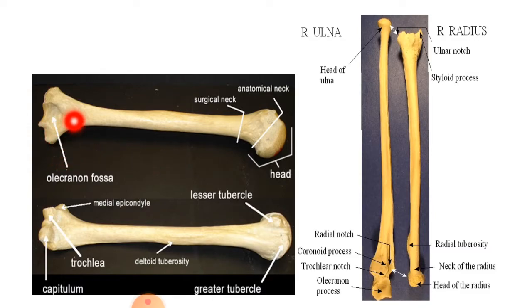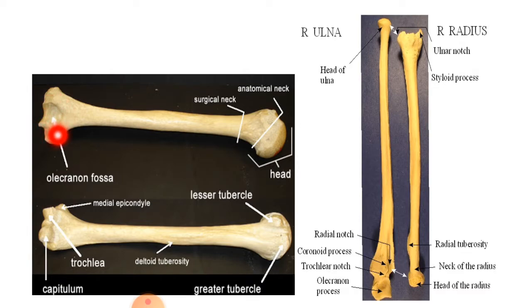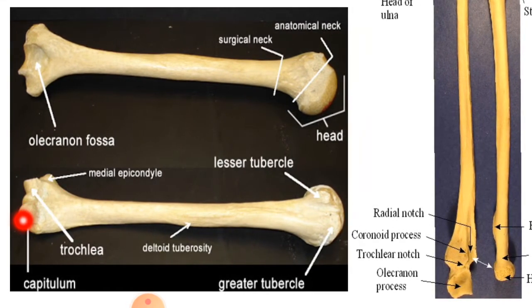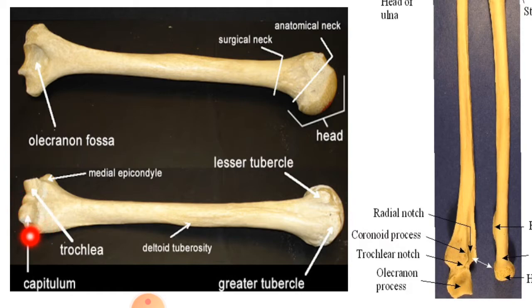At its distal end, you can appreciate various parts. This is the olecranon fossa, which forms the elbow joint and accommodates the olecranon process of the ulna. This is the trochlea, which will accommodate the trochlear notch of the ulna and take part in the formation of the elbow joint. This is the capitulum, which will accommodate the head of the radius and also form the elbow joint with the radius.